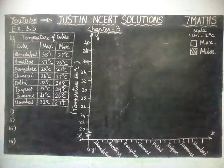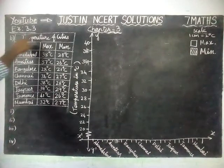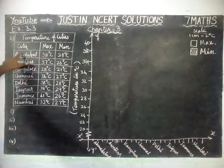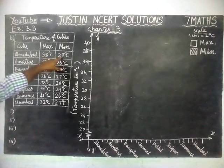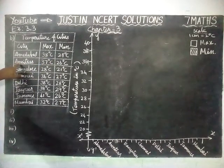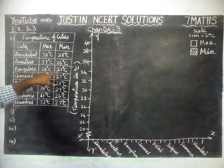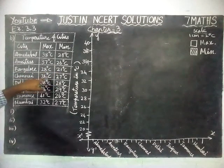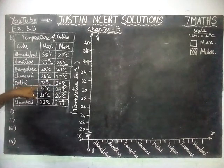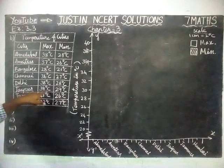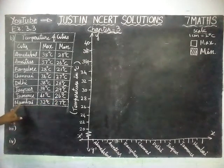First we will draw the bar graph, after that we will give answers. The temperature of the cities: first is maximum temperature and second is minimum temperature. Ahmedabad: 38°C and 29°C. Amritsar: 37°C and 26°C. Bangalore: 28°C and 21°C. Chennai: 36°C and 27°C. Delhi: 38°C and 28°C. Jaipur: 39°C and 29°C. Jammu: 41°C and 26°C. Mumbai: 32°C and 27°C.